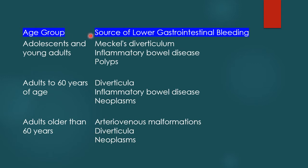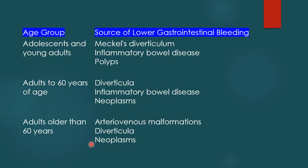Incidence by age group is important for diagnosis. In adolescents and young adults, common causes are Meckel's diverticulum, inflammatory bowel disease, and polyps. In adults up to 60 years, common causes include diverticulosis of the colon, inflammatory bowel disease, and neoplasms. In adults over 60, the common causes are arteriovenous malformations such as angiodysplasia, colonic diverticula, and carcinoma of the colon.